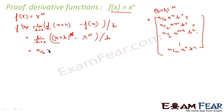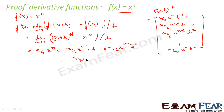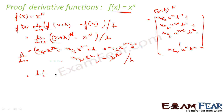Substituting a=x and b=h, this becomes: nC0·x^n·h^0 plus nC1·x^(n-1)·h plus nC2·x^(n-2)·h^2 ... plus nCn·x^0·h^n, minus x^n, all divided by h. Since nC0 is 1, the x^n terms cancel. Now every remaining term has h as a common factor.